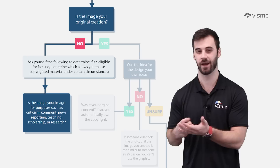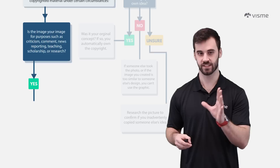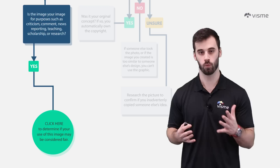Courts have cited examples of fair use in commentary, search engines, parody, teaching, news reporting, research, and more. So if your work falls under one of these categories, you can head straight to the fair use checklist, where you can double-check if the work could be considered fair. And if it's not, then there's more work to be done.